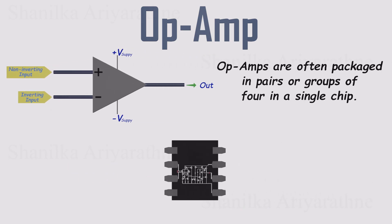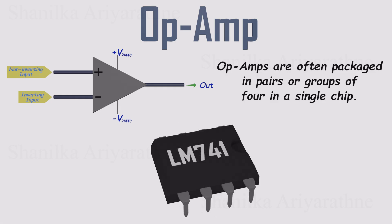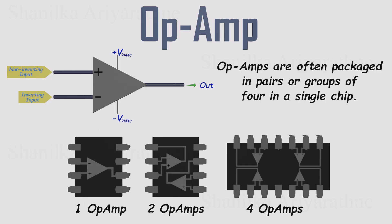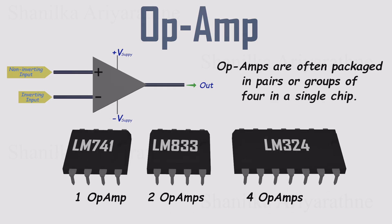Op-amps are packaged as integrated circuits, or ICs, which makes them super convenient. All those transistors and components are already built in. You just drop the chip into your circuit and add a few external parts. Since most projects need more than one, op-amps are usually sold in pairs or quads. One of the most common is the 8-pin dual op-amp package, which has become a standard in electronics.